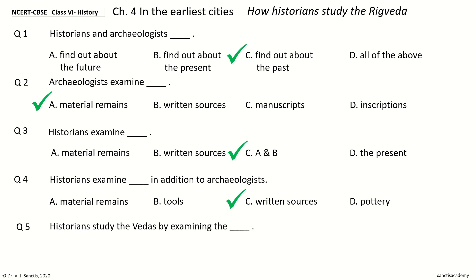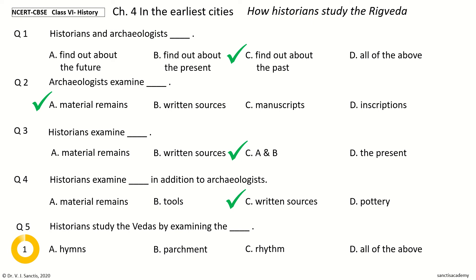Question 5. Historians study the Vedas by examining the — the options are: hymns, hymns and parchment, rhythm, or hymns, parchment, and rhythm — all of the above. Your time to choose. And the answer is hymns. So, historians study the Vedas by examining the hymns.